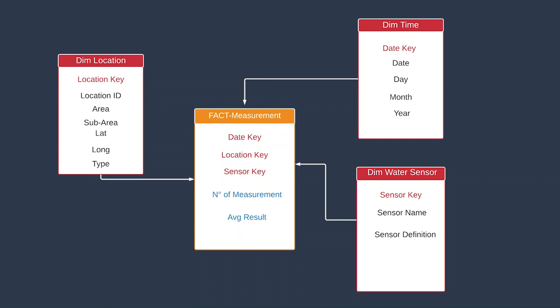As you see in the dimension of the location, we have a surrogate key, location key, and the location ID. We have the area which is the name of the place, sub-area, latitude and longitude, and we have the type of the location water.